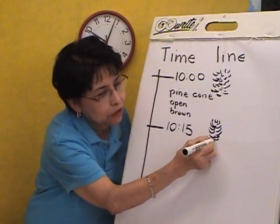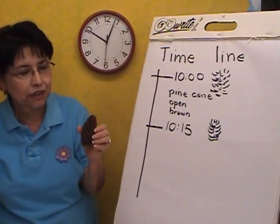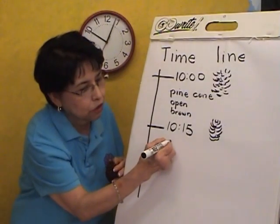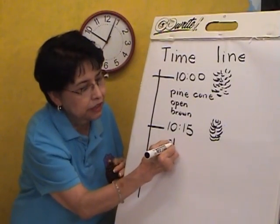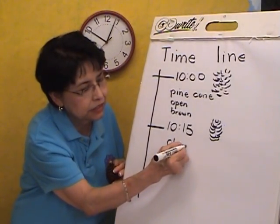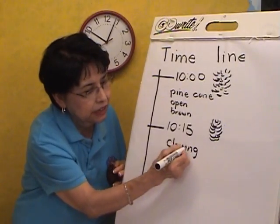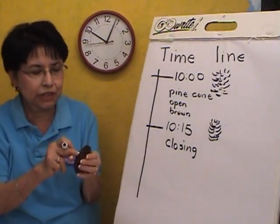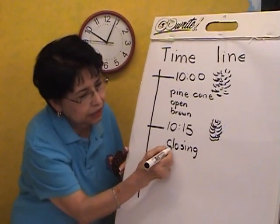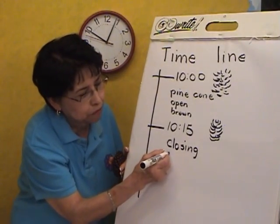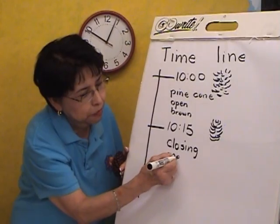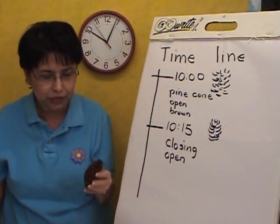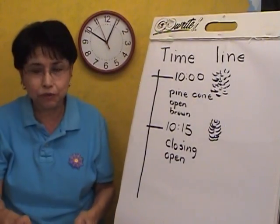Now I'm going to draw it — the breaks are a little bit closer. Look at my pine cone! So now what am I going to write? It's closing — C-L-O-S-I-N-G. It's still partially open. Encourage children to write in their journals.